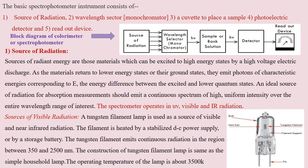Generally, the source of radiation is a material which can be excited to a higher energy state. When a high voltage electric current is applied to them, it emits a photon having characteristic energy E — the difference between the excited and the lower ground state energy. An ideal source of radiation for absorption should emit a continuous spectrum.